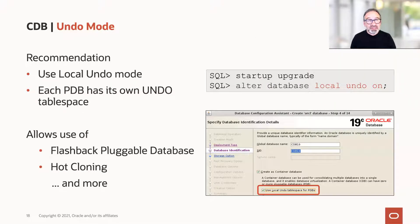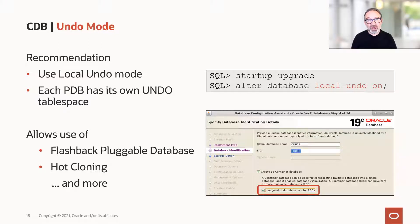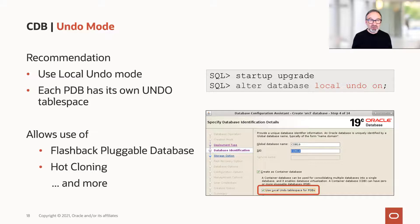Your container database, by default since 12.2.01, will be created with local undo — you can see in the screenshot that the box is also ticked on. If you would like to change local undo yourself, you need to bring the database into startup upgrade mode. We strongly recommend local undo because it is the requirement for all the cool features since 12.2: hot cloning, flashback pluggable database, and much more. We will highlight some of these features today as well.